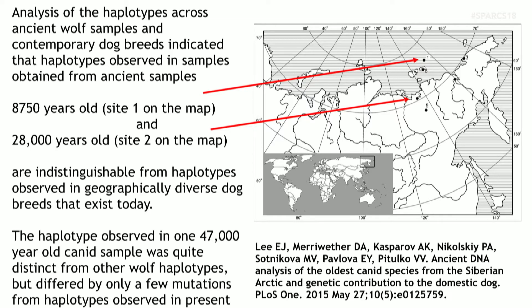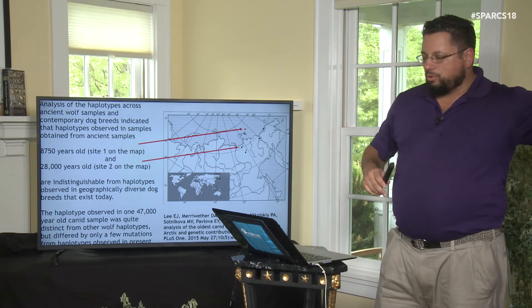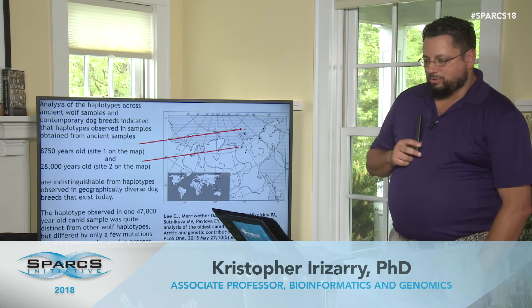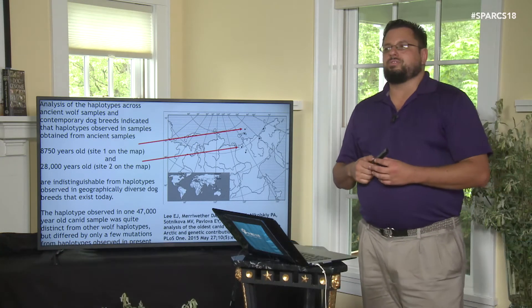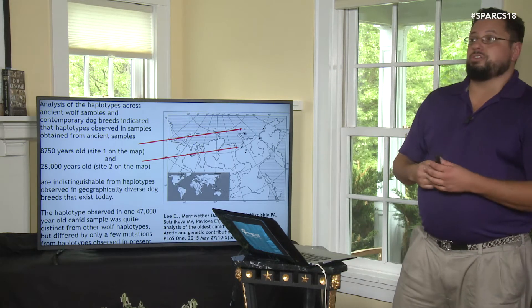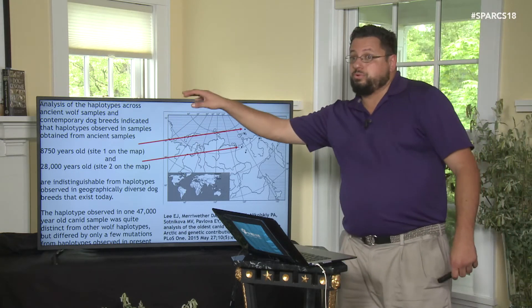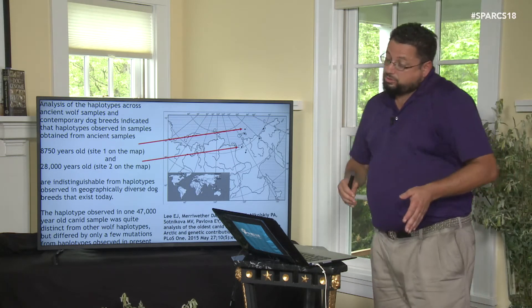There is a haplotype observed in one 47,000-year-old canid sample that is very distinct from other wolf haplotypes, and it differs from current-day dog haplotypes by just a handful of mutations. In 50,000 years you could have two spontaneous SNPs, which is what we see in dogs today. So researchers use this inference to argue that ancient sample is genetically quite close to modern dogs but not quite identical, suggesting a deep ancestral relationship.